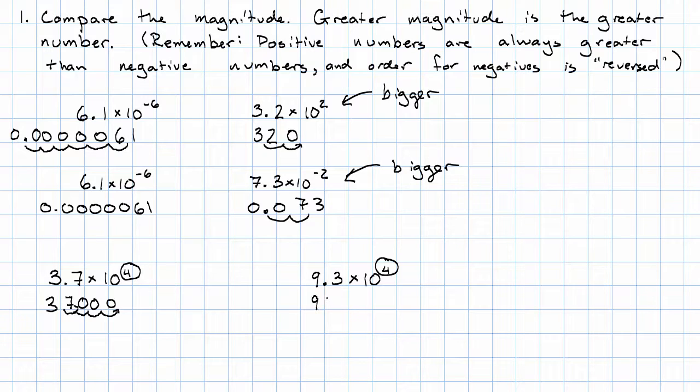Fill in the empty spaces with zeros. That's 37,000. 9, 3, 1, 2, 3, 4 places to the right. That's 93,000. Which one's bigger? 93,000.